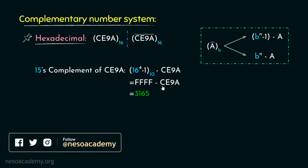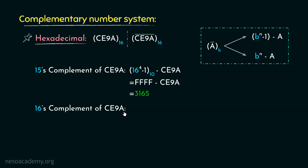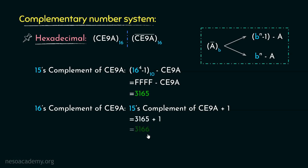Basically, we subtracted every digit from the largest hexadecimal symbol, that is F. Now the 16's complement, or the radix complement, of CE9A can be obtained by taking the 15's complement and adding 1 to it. We just obtained the 15's complement of CE9A, that is 3165. Adding 1 to it, we obtain 3166, which is the radix complement of CE9A. So CE9A bar in diminished radix complement is 3165 and in radix complement it is 3166.